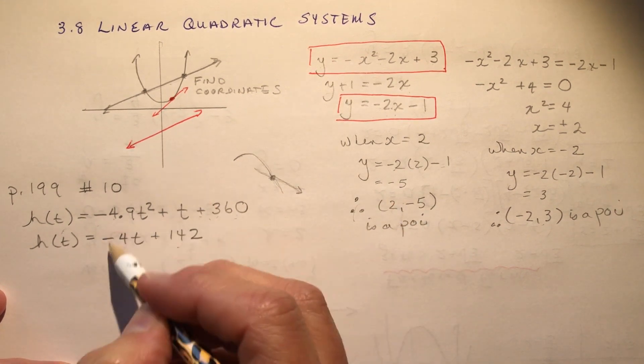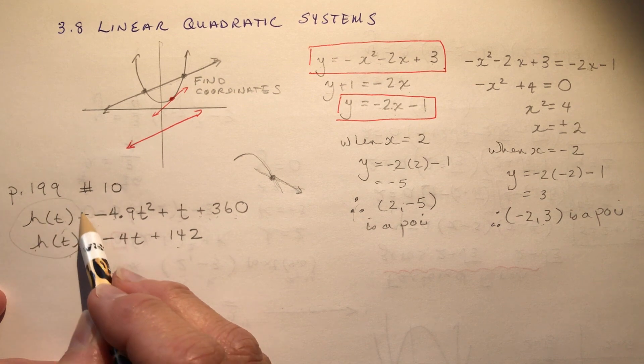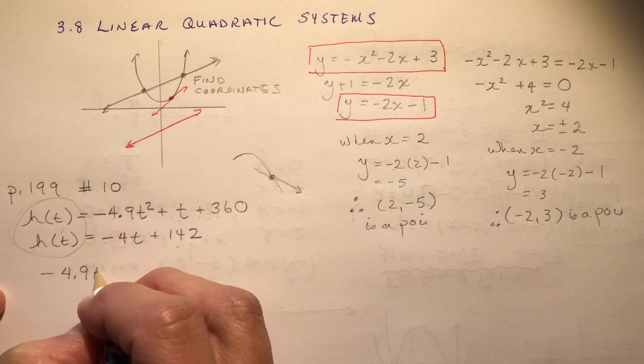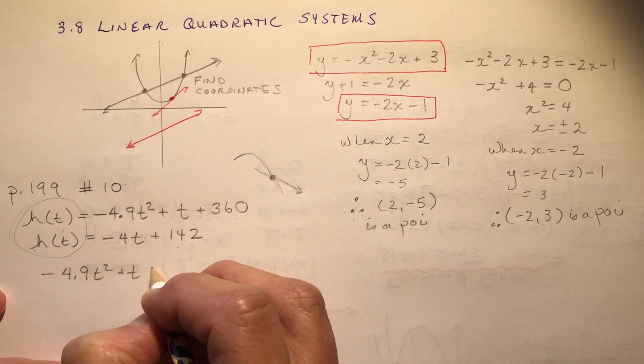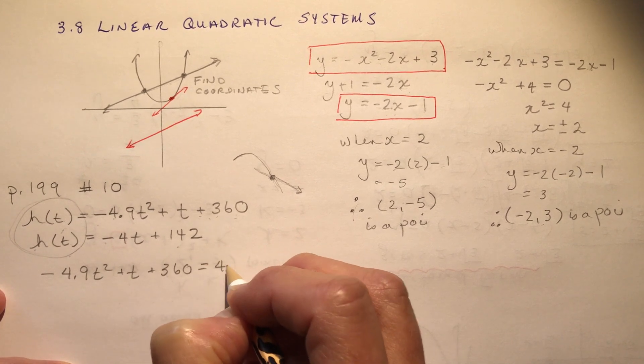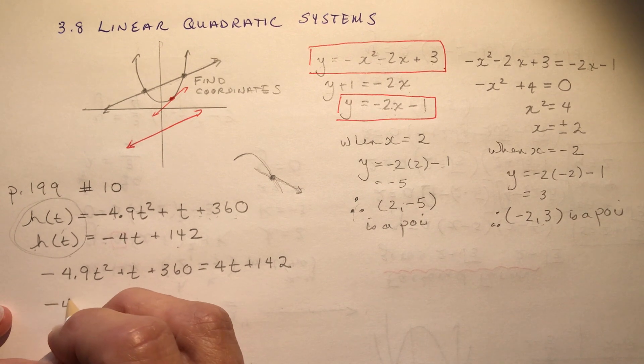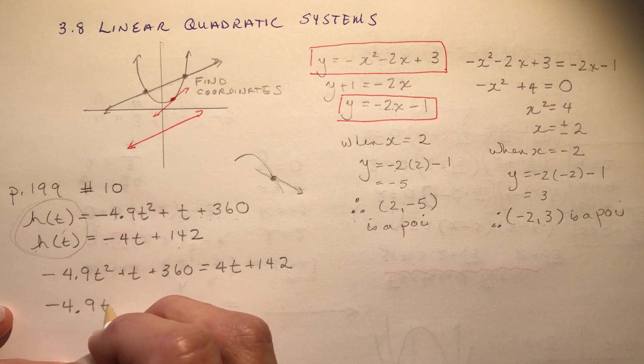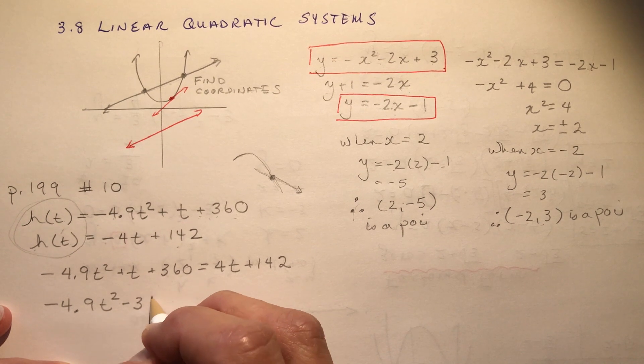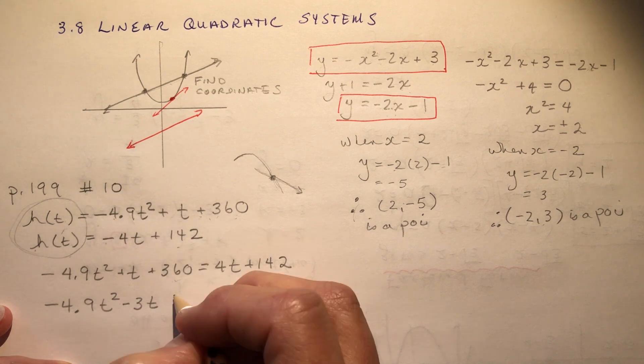So if we set these two equations equal to each other, and they're already in the format of ht on both sides, so that makes it pretty easy for me to set up an equation here. All I have to do is set it equal to the other equation. Then you rearrange your equation by bringing things all to one side. I'm going to subtract 4t, that would be minus 3t, and 360 minus 142 is 218.